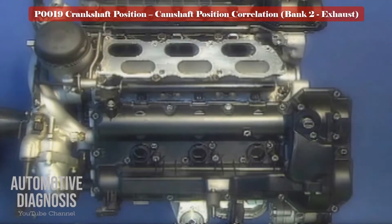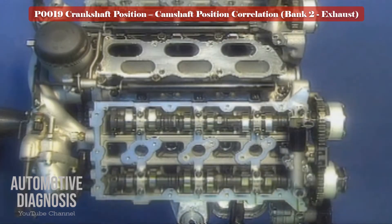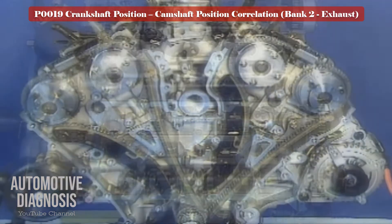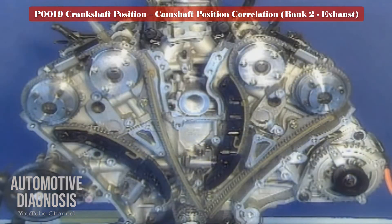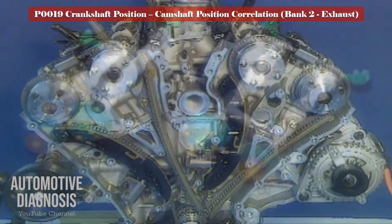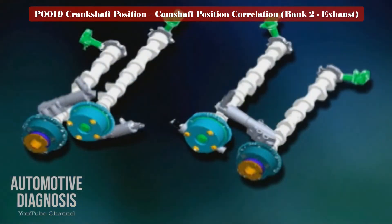Locate the VVT solenoid for further testing. If you have a dual VVT engine, there are a camshaft position sensor, VVT, and VVT solenoid on each camshaft. So locate the bank 2 exhaust VVT solenoid for this fault code.